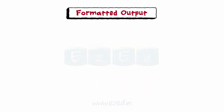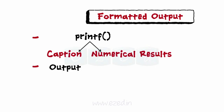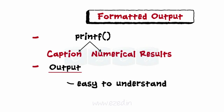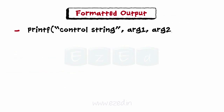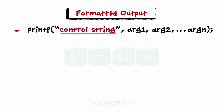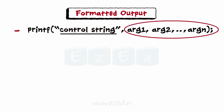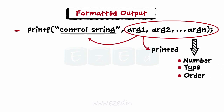Moving on to studying the way to display formatted output: printf is used to output captions and numerical results in an easy to understand format. This is the general format of the printf statement. The control string consists of characters that will be printed, the format specification representing the output format for display, and escape sequence characters like \n or \t. The arguments arg1, arg2, ..., argn are arguments whose values are formatted and printed according to the specification of the control string, and should match in number, type, and order with the format specification.